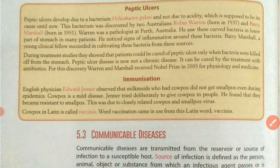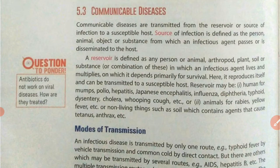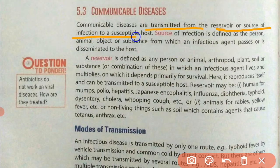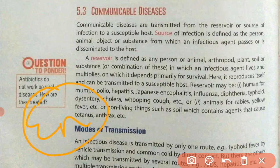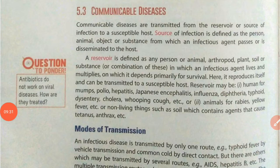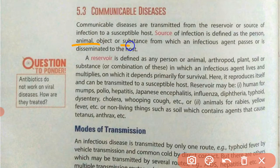Now, let us learn about communicable diseases in detail. Communicable diseases are those which transmit from the reservoir or source of infection to a susceptible host. They can be carried from an unhealthy person to a healthy person, and can also be transferred from the environment — such as from an unhygienic environment to a person. The source of infection is defined as the person, animal, object, or substance from which an infectious agent passes to a healthy person or host.